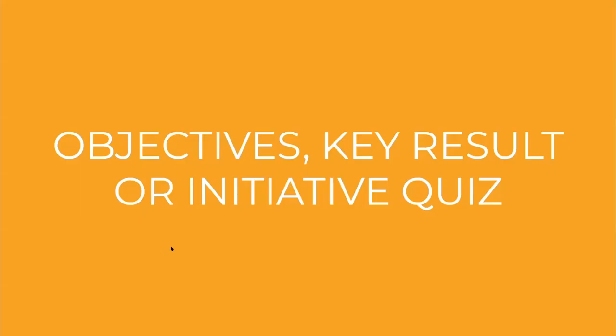We've talked a lot about OKRs. I can see a few people here who have been on the training — I reckon you'll blitz this. This is a bit of a quiz to challenge your understanding of the OKR framework. What I want to do is pulse check: what do you think is an objective, a key result, or an initiative based on a number of examples? As you're implementing this or supporting your teams with OKR, you'll be able to coach them on these conversations.